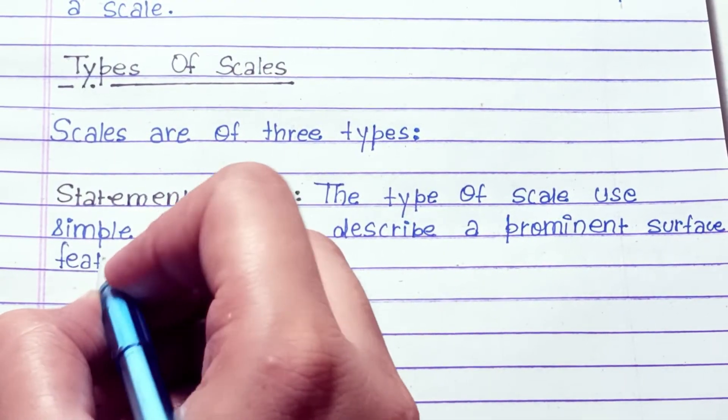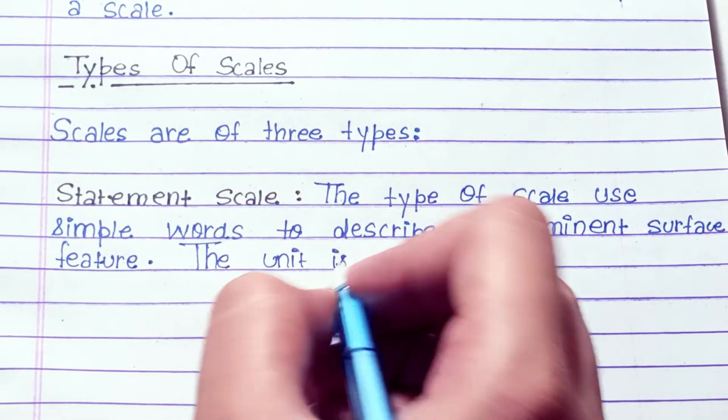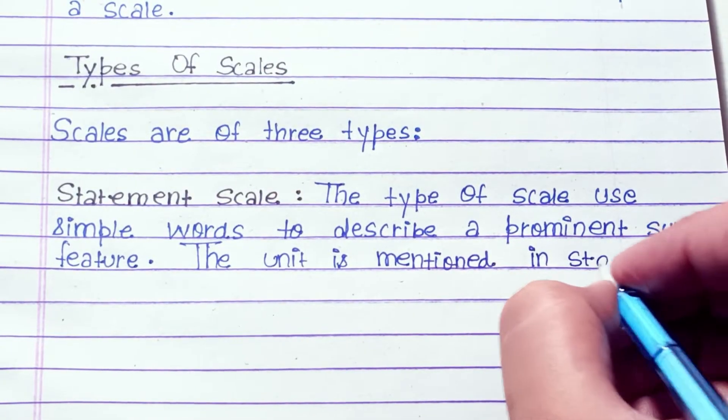Types of scales. Scales are of three types. Statement scale. This type of scale uses simple words to describe a prominent surface feature. The unit is mentioned in statement scale. It is also called verbal scale or verbal statement scale.